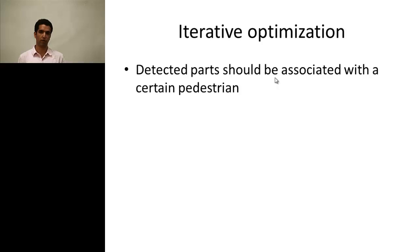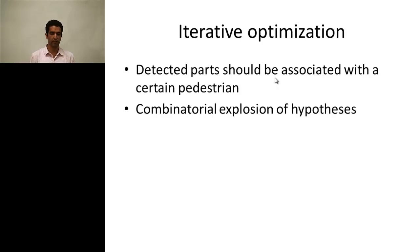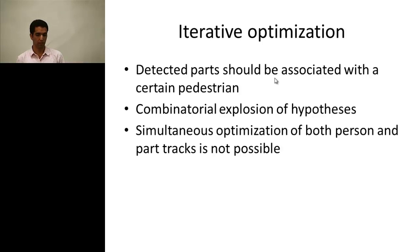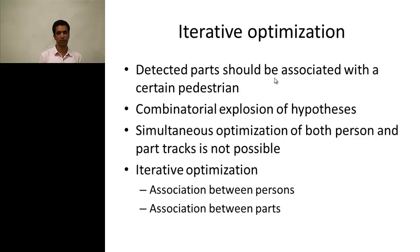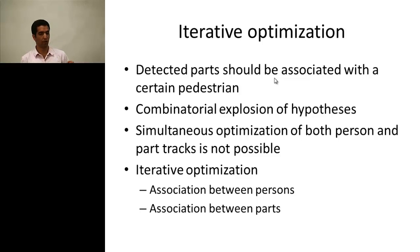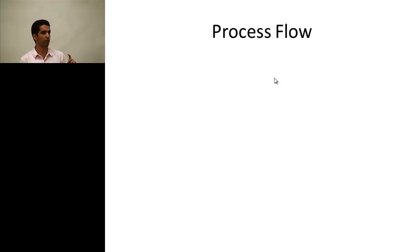We want to associate between the detected parts and the persons. But since we have lots of parts in each frame and lots of persons, we would have a combinatorial explosion of hypotheses. So we cannot simultaneously optimize the person track and part track in one iteration. Instead, we use iterative optimization: first associate between the persons in all frames, then use the person track to track the parts within each person's track.